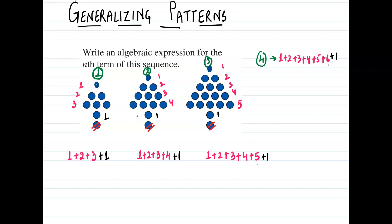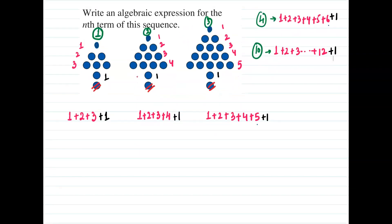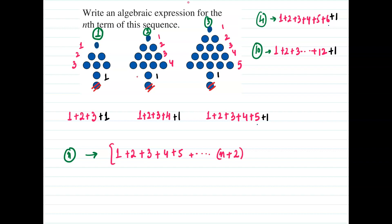Can you guess for the tenth one? For the tenth figure, it's going to be from one plus two plus three, going up to twelve, because it's always two more, plus one. Similarly, for the nth figure, it's going to be one plus two plus three plus four plus five, up to n plus two, because it is always two more than the number. So n plus two is the last term, and one has to be added as the constant.